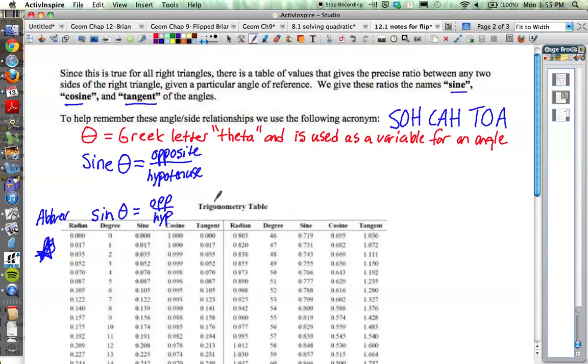Now, the next one is cosine. Cosine is going to be the ratio between the adjacent side and the hypotenuse. And we'll abbreviate it C-O-S of theta, cosine theta, is equal to adjacent divided by hypotenuse. So you'll see on your calculator there'll be a C-O-S button that stands for cosine.